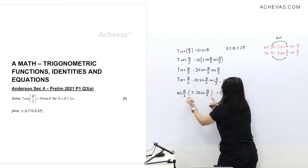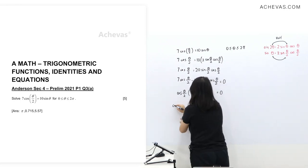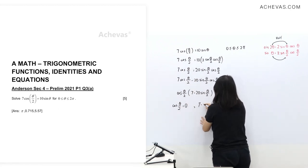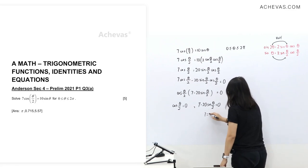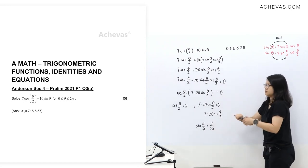Then we know that two things multiplied by it will be 0. So we have two solutions here. Solution number 1 and solution number 2. I'm going to further do this step here. And we'll reach sin theta over 2 equals 7 over 20 here.